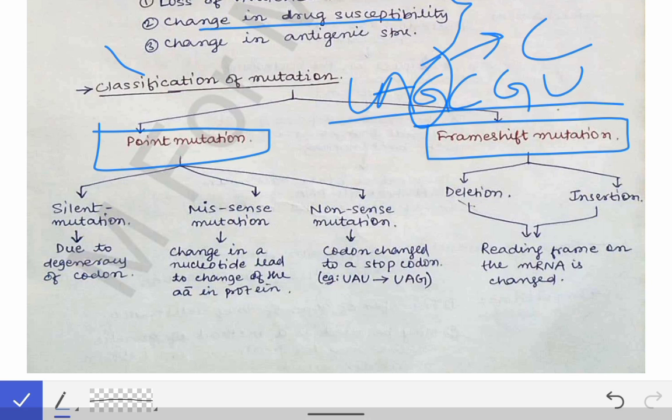If a nucleotide is inserted or deleted from a sequence, it is called a frameshift mutation, because insertion or deletion changes the reading frame of the codons. For example, inserting an A into a sequence changes the codon CGU to CAG, shifting the reading frame entirely. Whenever there is insertion or deletion of a nucleotide, it is a frameshift mutation; substitution is a point mutation.